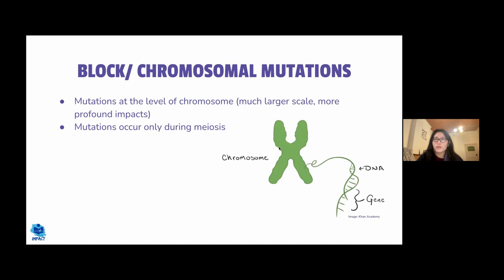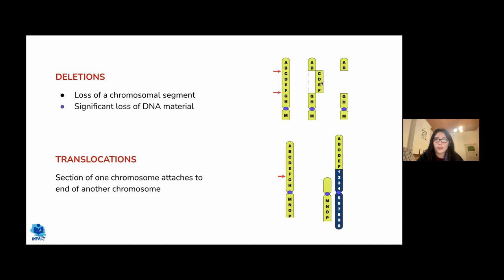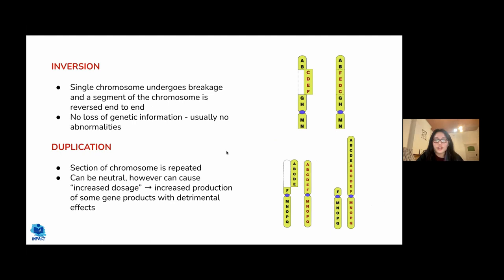Block mutations occur at the level of the chromosome, affecting multiple genes, so they have more significant impacts than point mutations. These mutations occur during meiosis. Examples include deletions, where a section of chromosome is completely deleted; translocations, where a section of one chromosome attaches to the end of another; and inversions, where part of a chromosome undergoes breakage, flips around, and reinserts in the reverse direction.